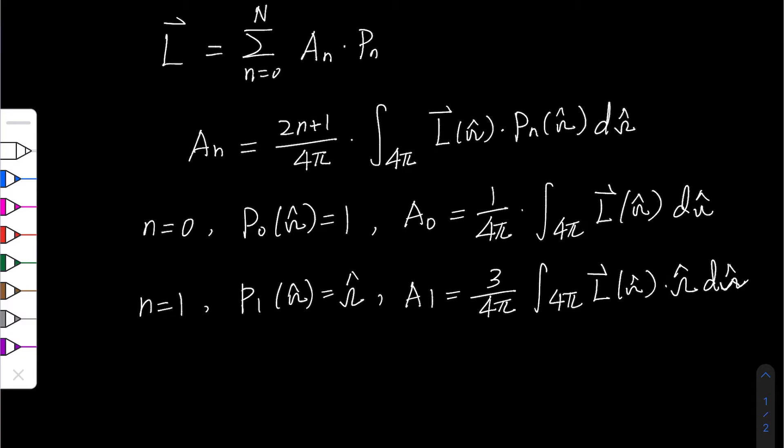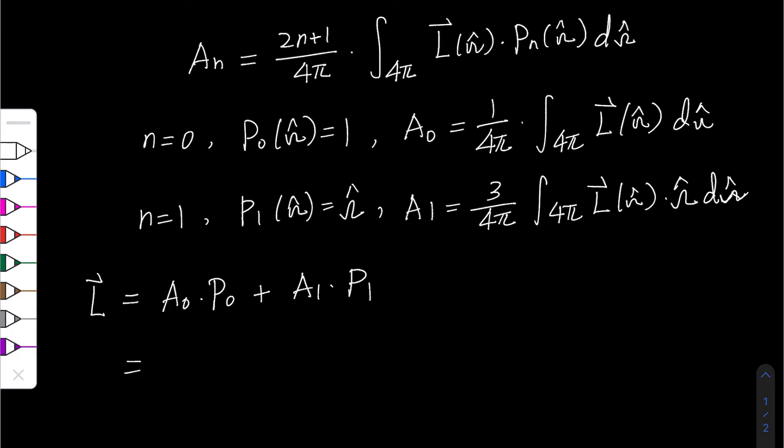So this L can be written as A0 times P0 plus A1 times P1. So P0 equals 1, so here we only have A0, which would be 1 over 4π times the integral of L over the integral of all the direction of omega hat.